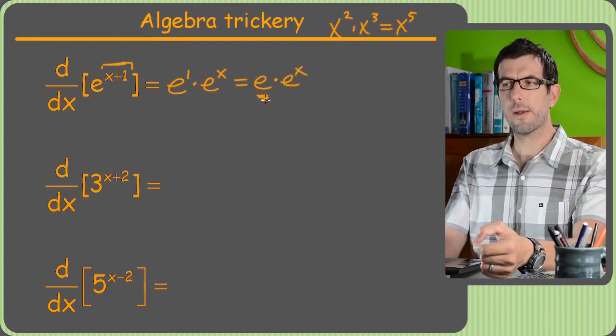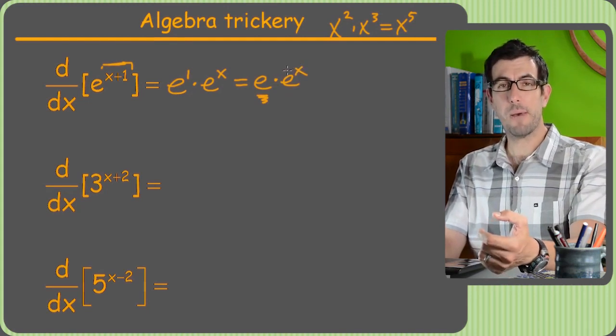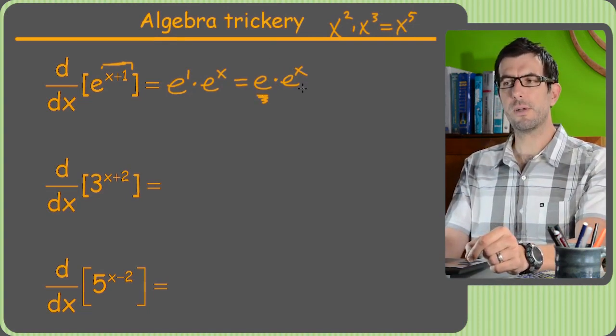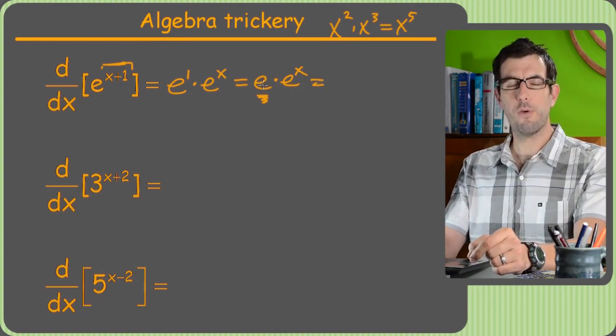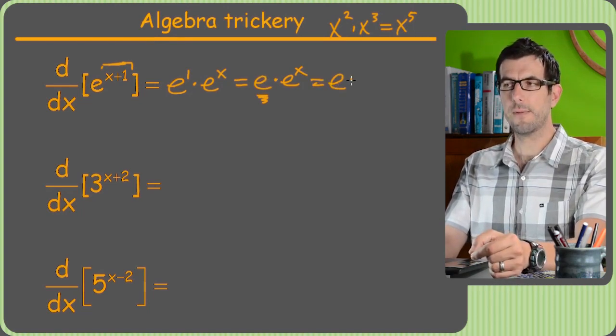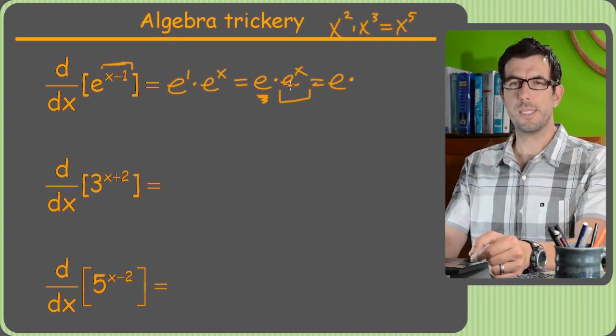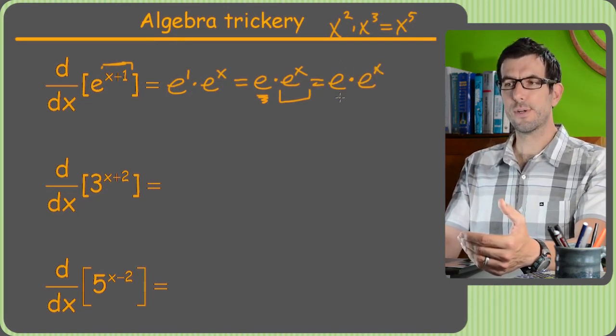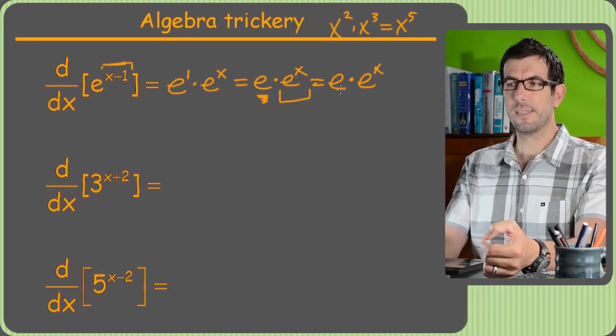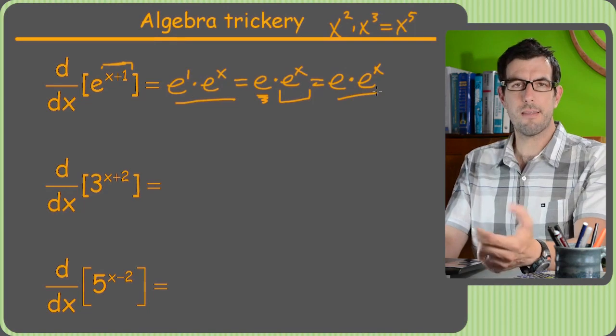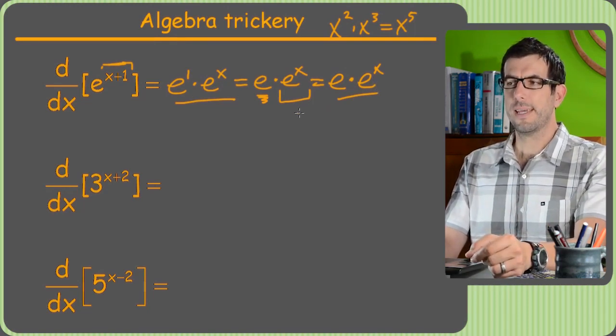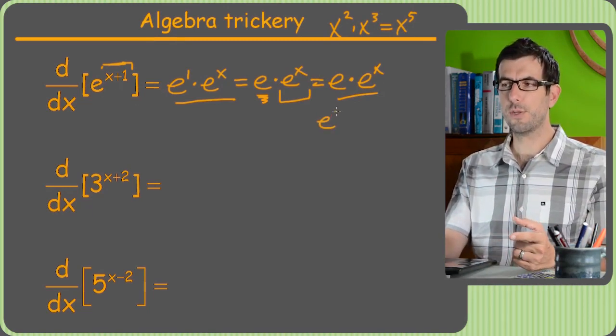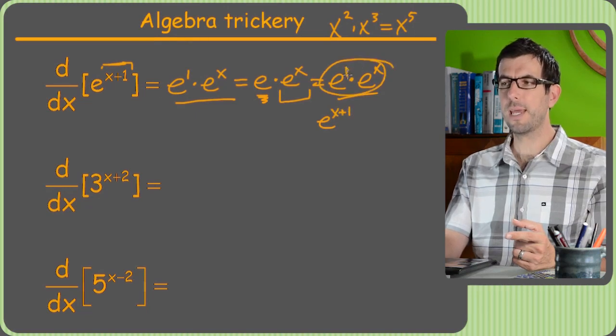And the reason this is nice is because e is just a number. The number e, this guy right here, that's just 2.7 something, it's kind of like pi, it's just a specific number, it's 2.7 something, never ending decimal, whatever. Point is though, this is really just a number times e to the x. And what do you do when you have a coefficient out in front of something? You just leave it alone, right? So e. And then we'll take the derivative just to the part that has an x in it, which is e to the x. But of course, the derivative of e to the x is just e to the x. So it turns out that the derivative of this is exactly what we started with, right? We went from this to this, we just, nothing happened.